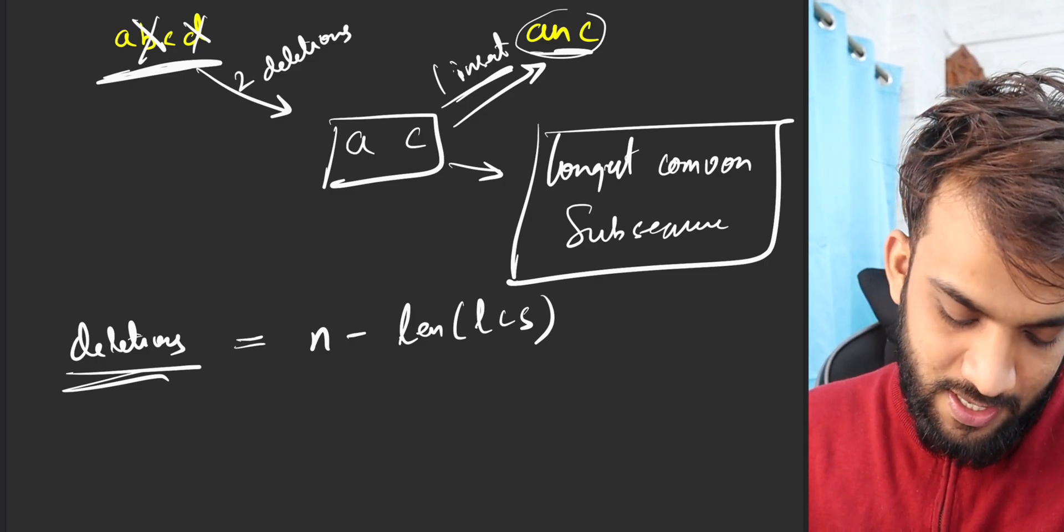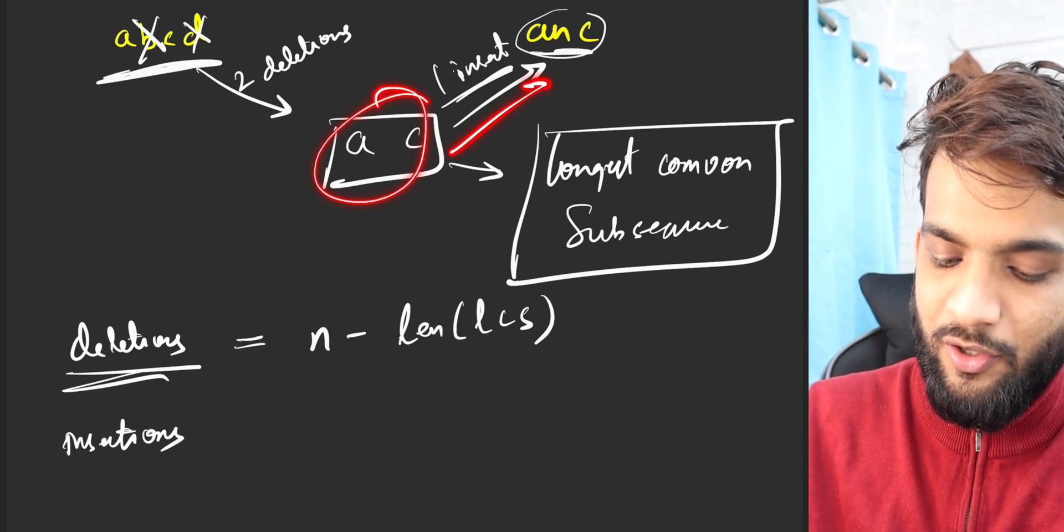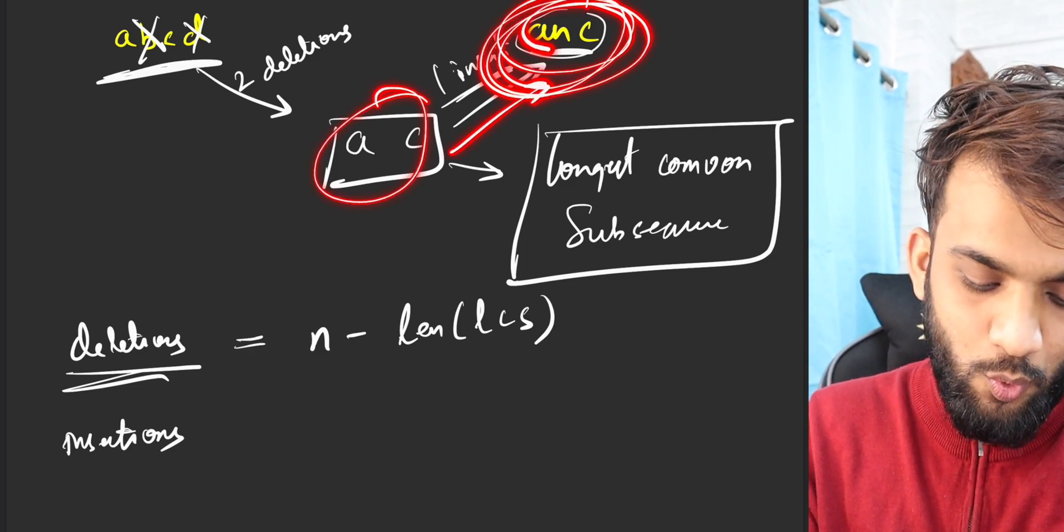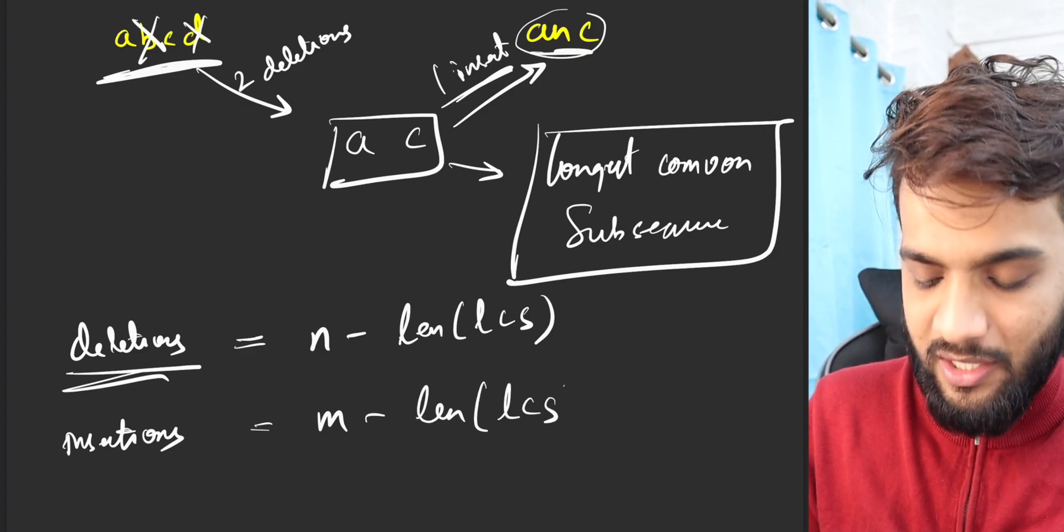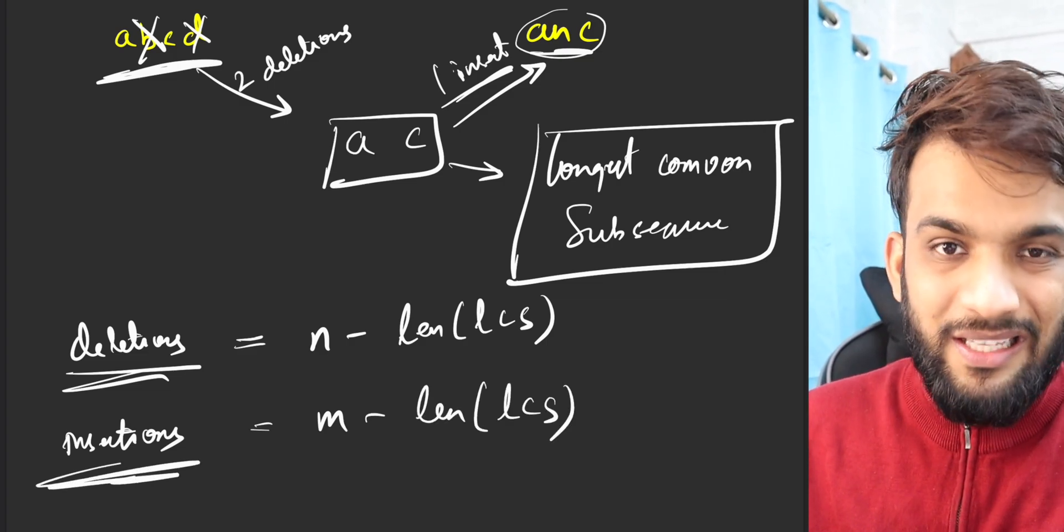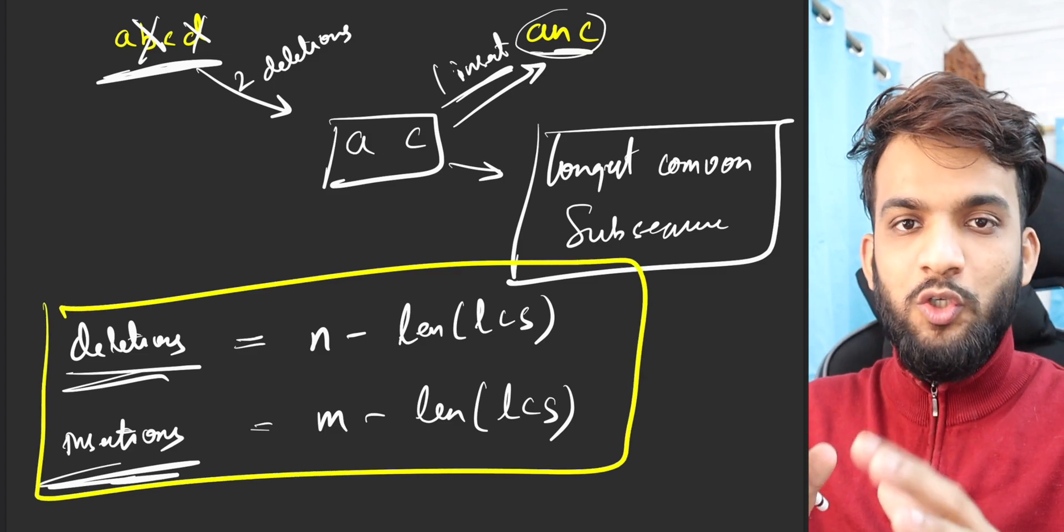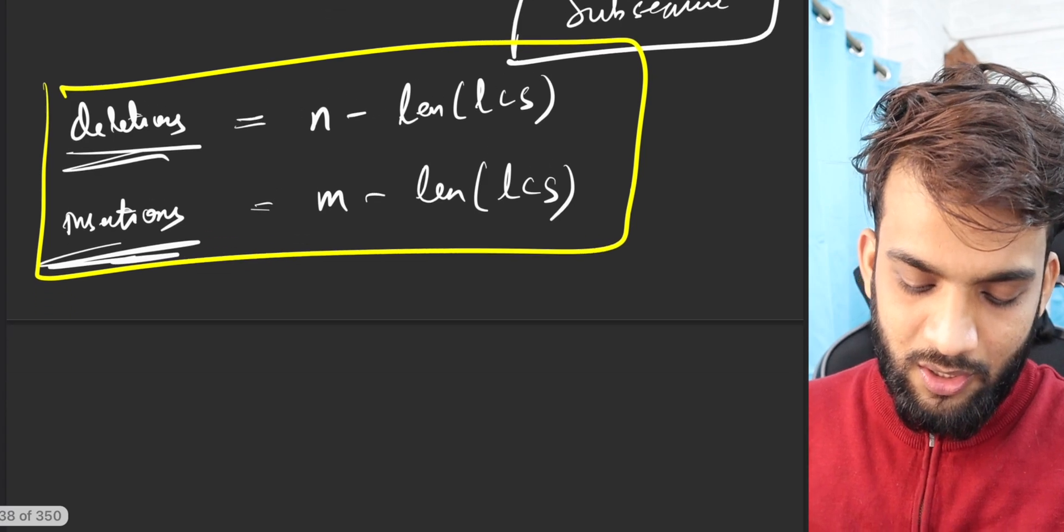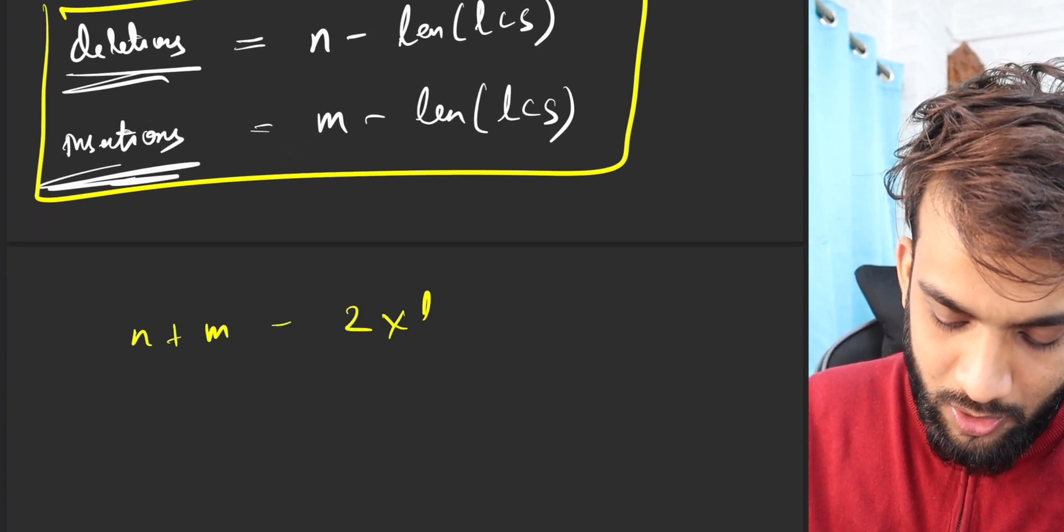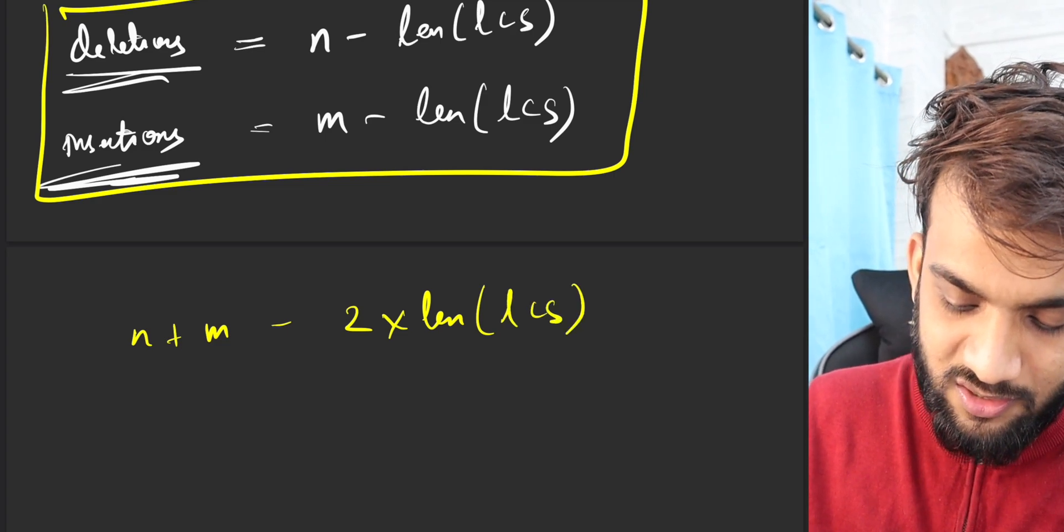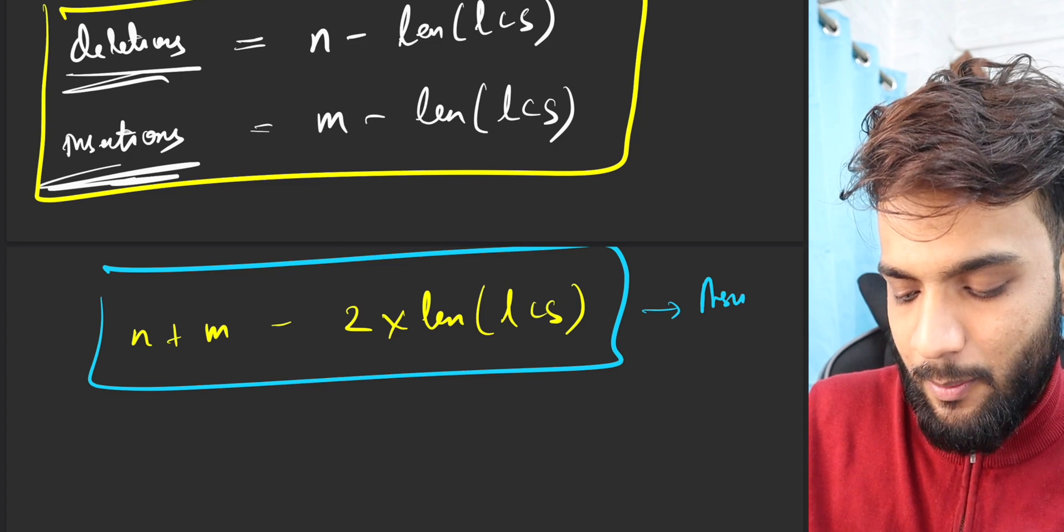Makes sense - N minus the length of the LCS. And the number of insertions will be, I know this is easy, I need to convert this into something as str2. So can I say M minus the length of the LCS is what I need to insert? Those will be the insert operations. And can I say if I require the total number of operations, that's gonna be N plus M minus 2 into length of LCS? Absolutely yes, and this is what my answer is.